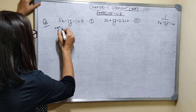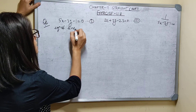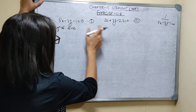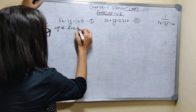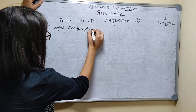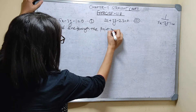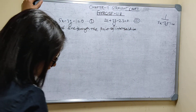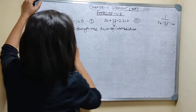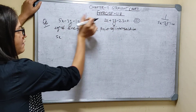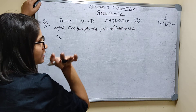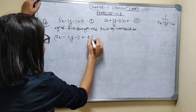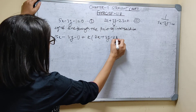First I will write the equation of the line, or the family of equations of lines passing through the point of intersection of these two lines. The equation of a line through the point of intersection of L1 and L2 is L1 plus K times L2 equals 0. So: 5x minus 3y minus 1 plus K times (2x plus 3y minus 23) is equal to 0.